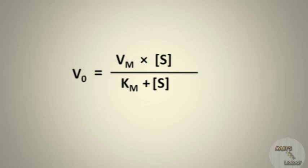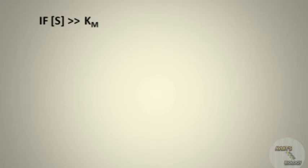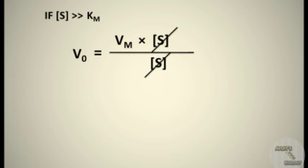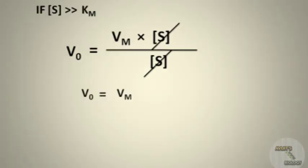Here, Vm is the maximum rate achieved by the system at saturating substrate conditions, and Km is the Michaelis-Menten constant. When substrate concentration is very large compared to Km — that is, [S] >> Km — then V0 equals Vm times [S] divided by [S], and [S] cancels out, giving V0 equals Vm. The velocity of the reaction reaches its maximum, Vmax.